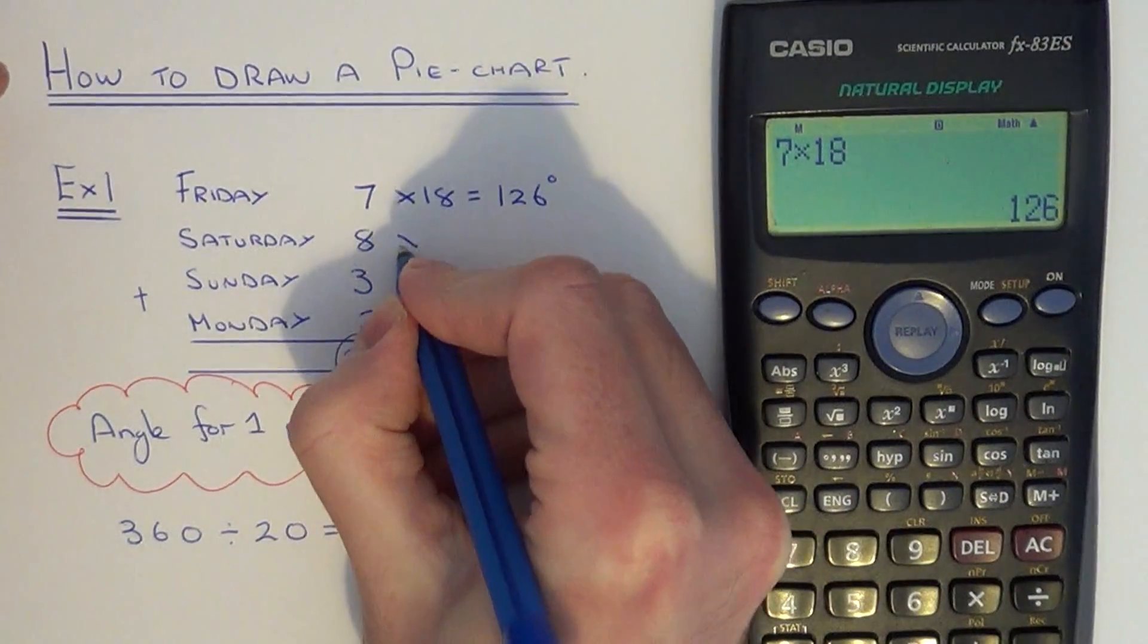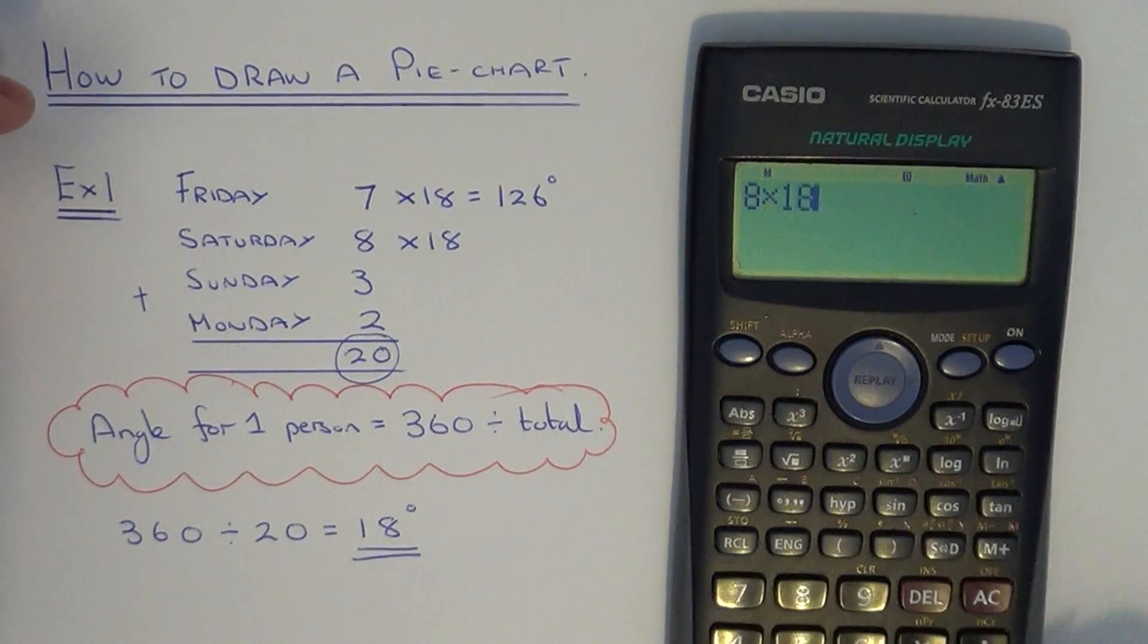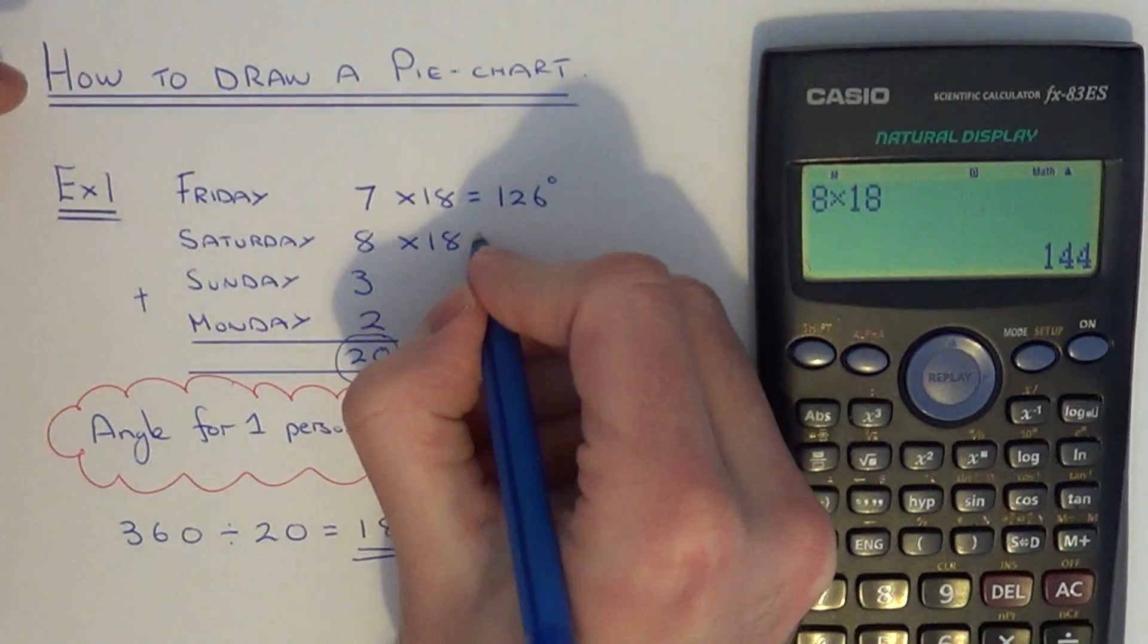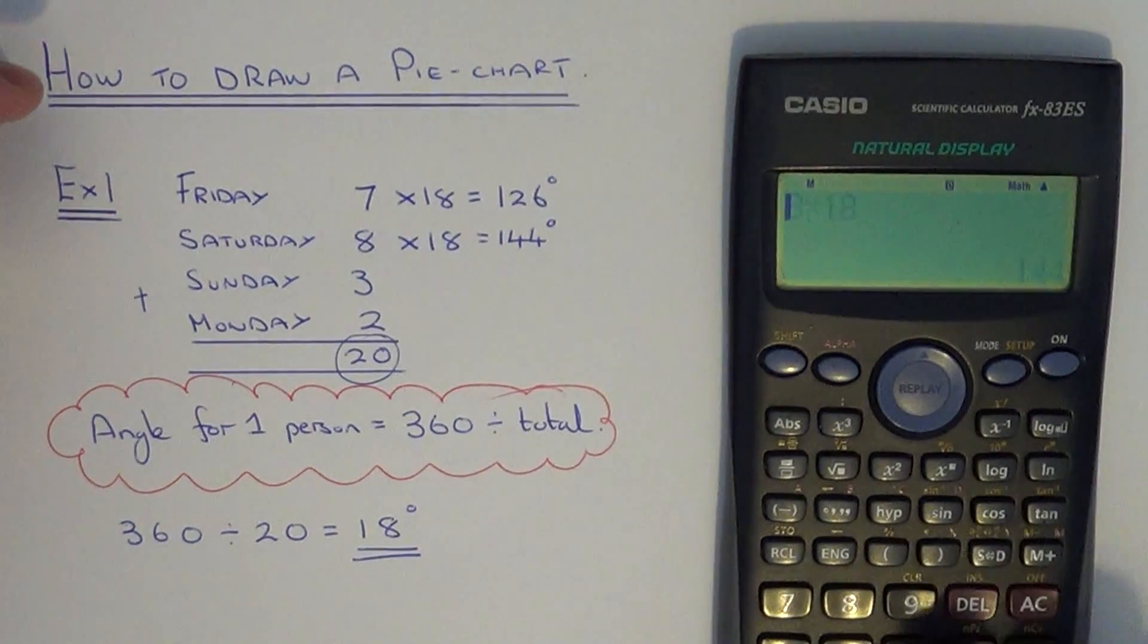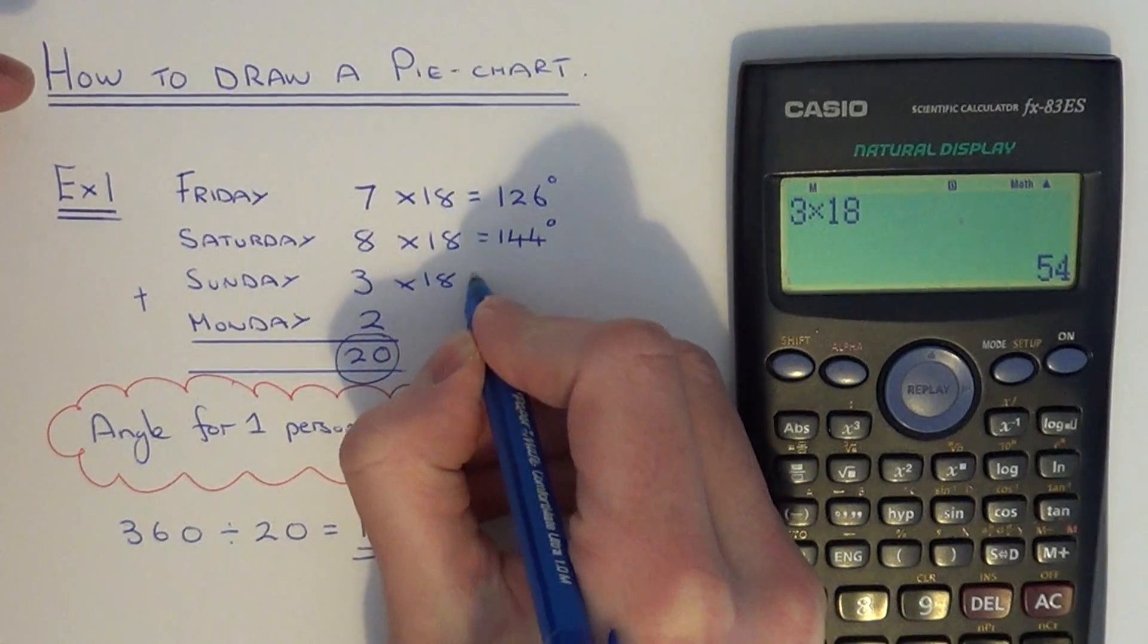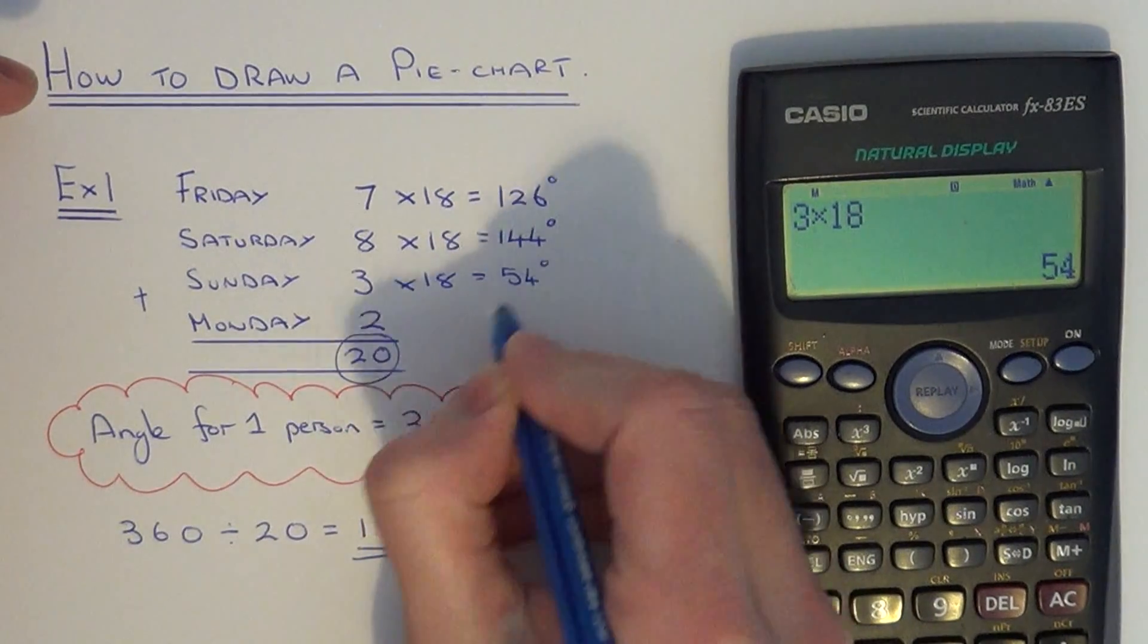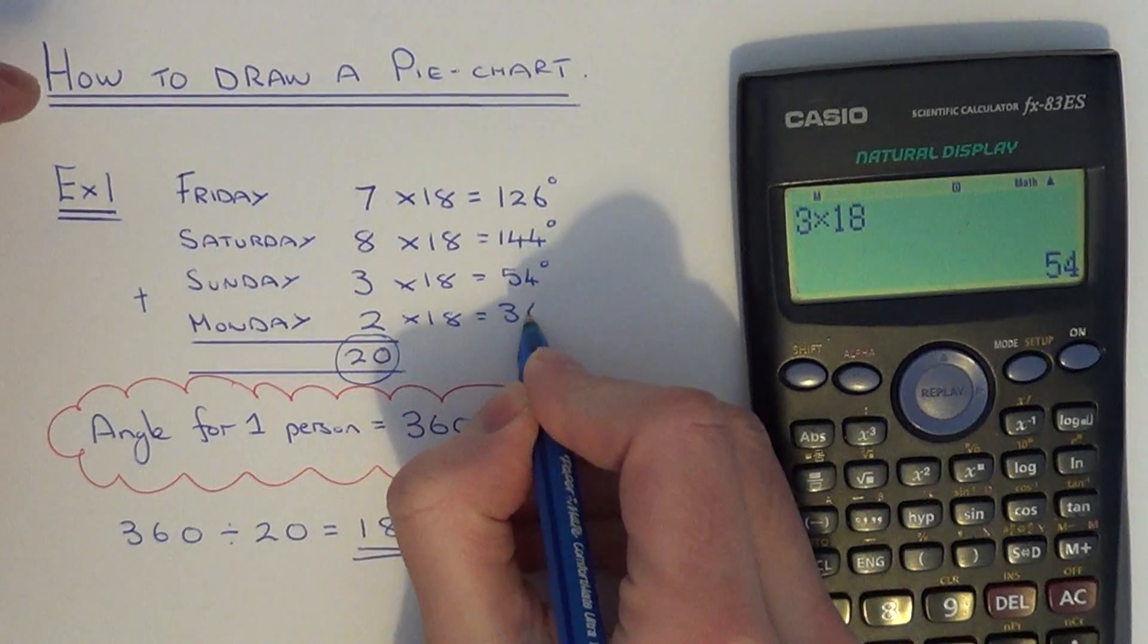3 times 18 is 54, and 2 times 18 is 36 degrees.